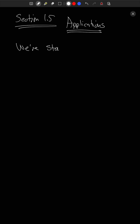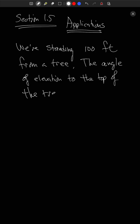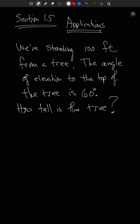Here's our first example: we're standing 100 feet from a tree. The angle of elevation — I'll explain what that means in a second — to the top of the tree is 60 degrees. How tall is the tree?